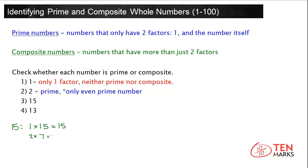2 times 7 equals 14, and 2 times 8 equals 16. We can't multiply 2 by any number and get 15, so 2 is not a factor of 15. Let's try another number. Is 3 a factor of 15? Can we multiply 3 by a number and get 15? 3 times 5 equals 15, so 3 is a factor of 15.